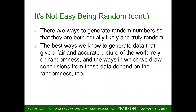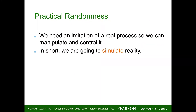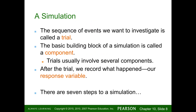There are ways to generate random numbers that are both equally likely and truly random. The best ways to generate data that give a fair and accurate picture of the world rely on randomness, and the ways we draw conclusions from that data depend on randomness too. We need an imitation of the real process so we can manipulate or control it — in short, we're going to simulate reality. The sequence of events we want to investigate is called a trial. The basic building block of simulation is called the component; trials usually involve several components. After the trial, we record what happened in our response variable.